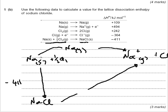So if you look at that first, I've got my Na solid going to Na gas, which is positive 109. And then I've got the formation of the Na plus ion, first ionization energy, of plus 494.